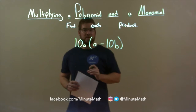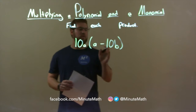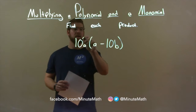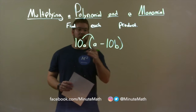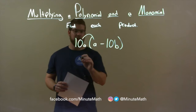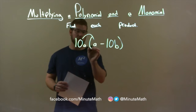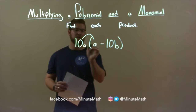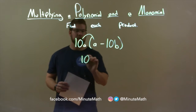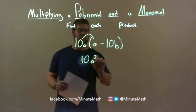I want to take the 10a and multiply it to both terms in the parenthesis. 10a times a — there's only one a, so the coefficients: there's a one coefficient right there. 10 times 1 is 10. a times a, though, is a squared.